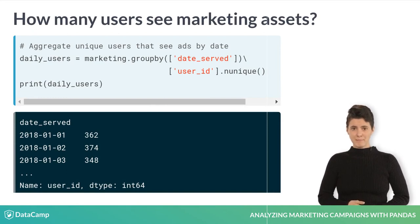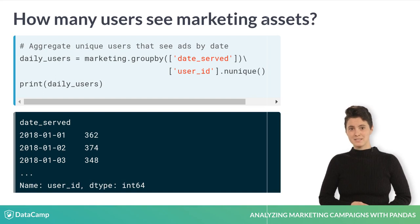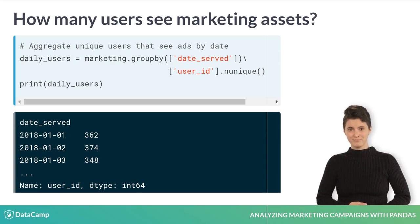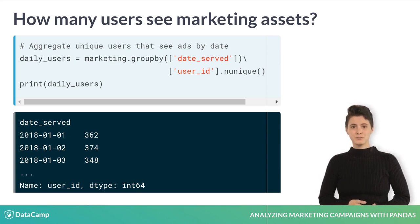We can use the groupby method on the marketing data frame. To group by date, we pass the date served as the argument to groupby. Next, we select the user ID column outside of the groupby and use the nUnique method to count the number of unique users per day. Looks like about 300 users each day see our ads.